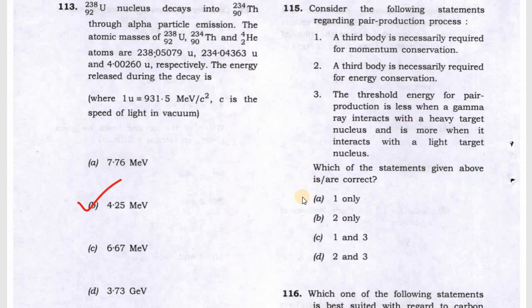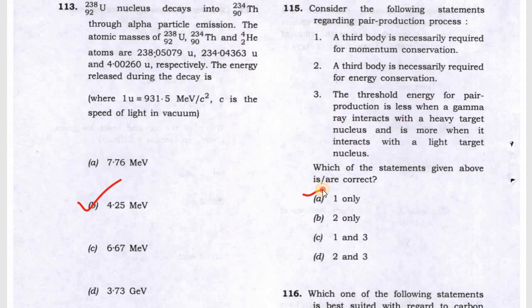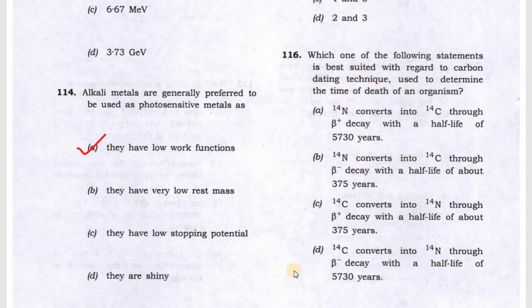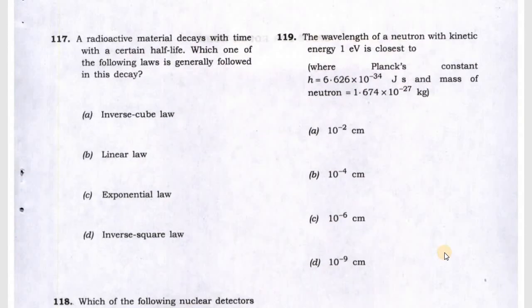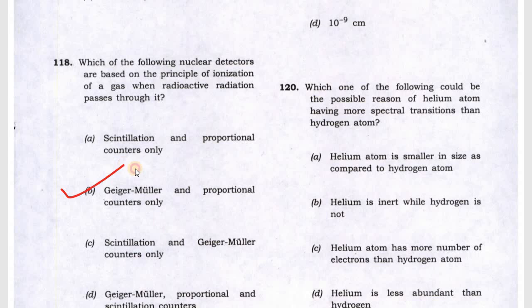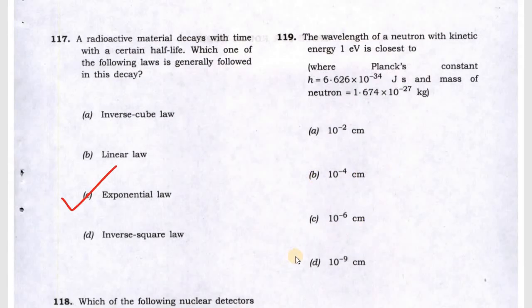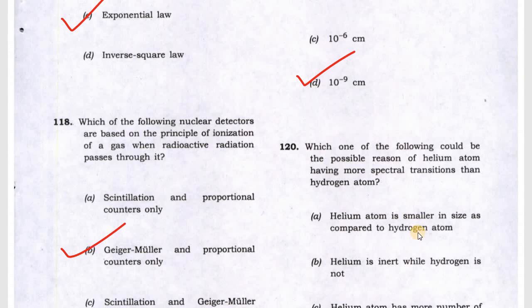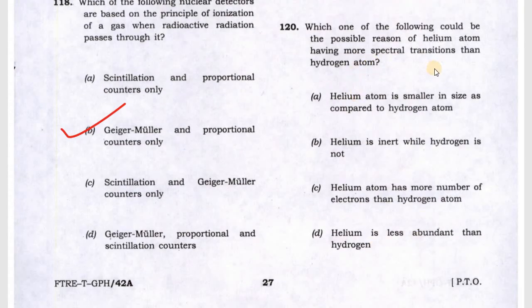Next is carbon dating, answer is D. Carbon converts into nitrogen. Question 117 will be the exponential law. Question 118 is B. Question 119 is D. Question 120 asks about helium atom and hydrogen spectra. Answer is C: helium atom has more electrons than hydrogen atom.